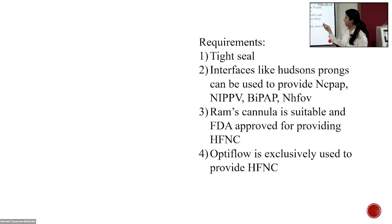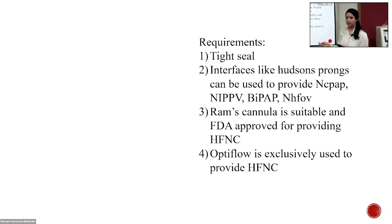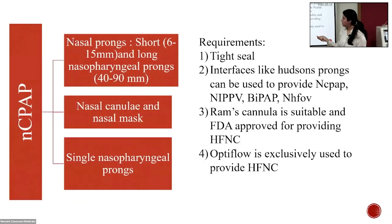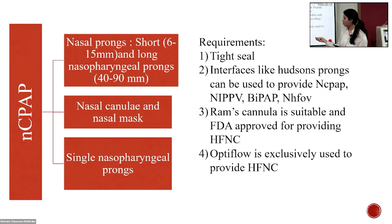Interfaces like Hudson prongs, Argyle prongs, and short binasal prongs are used to provide NCPAP. They can also be used to provide NIPPV and BiPAP. The RAMS cannula is suitable and FDA approved only for providing HFNC; it can also provide low-flow and high-flow oxygen. The Optiflow cannula is exclusively used to provide HFNC. The short binasal prongs are the best to provide nasal CPAP. Nasal masks are used as well, and earlier, single nasopharyngeal prongs would also be used.